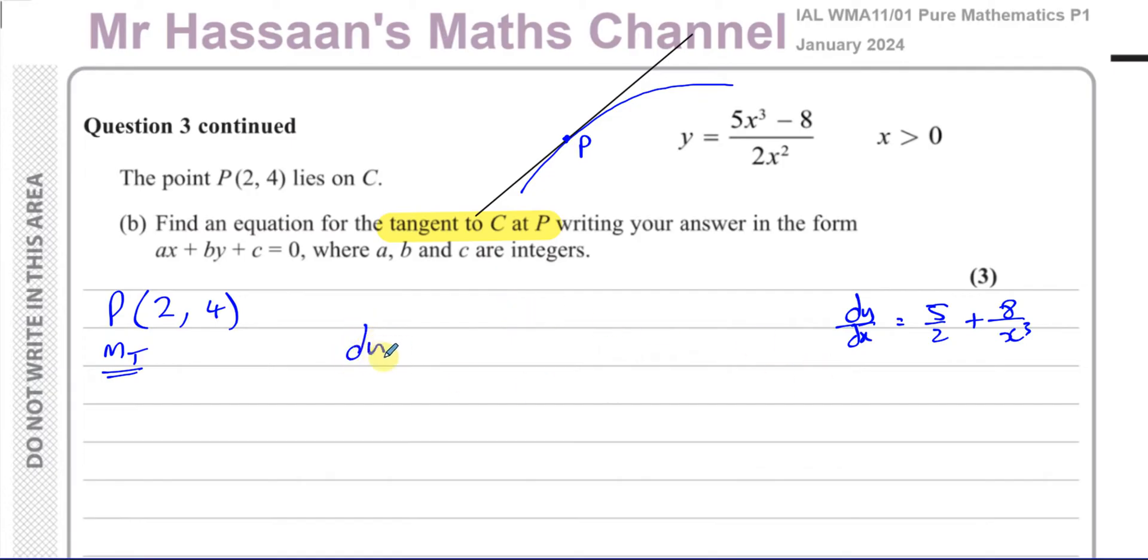If I can find the gradient of the curve at P, that will be the same as the gradient of the tangent. So we found dy/dx for this function equals 5 over 2 plus 8 over x cubed. We need to find what dy/dx is when x equals 2 at P. That will tell me the gradient of the curve at P which will be the same as the gradient of the tangent. So the gradient of the tangent at P equals dy/dx when x equals 2, which is 5 over 2 plus 8 over 2 cubed. Which is 5 over 2 plus 1, which is 7 over 2.